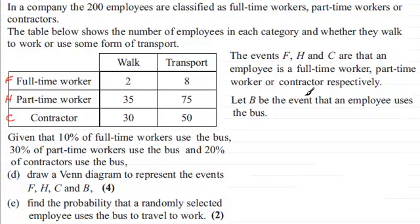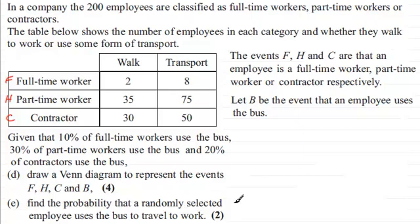We're told to let B be the event that an employee uses the bus. Given that 10% of full-time workers use the bus, 30% of part-time workers use the bus, and 20% of contractors use the bus, we have to — in part D — draw a Venn diagram to represent the events F, H, C, and B for four marks. Then in part E, find the probability that a randomly selected employee uses the bus to travel to work for two marks.